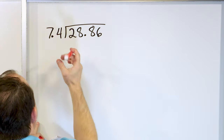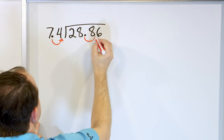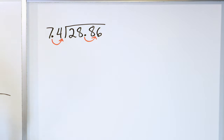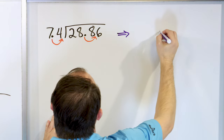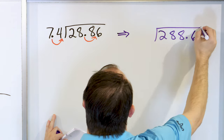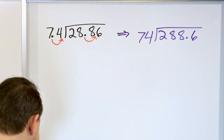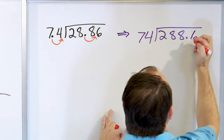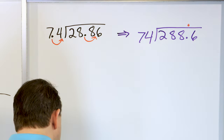So we want a whole number on the outside. We move the decimal one position here, and to keep it balanced, we move one position there — multiplying by 10 and multiplying by 10. So the related problem is 288.6 divided by 74. First, we take a look at what we have — there's a decimal point here, and the decimal point in the answer will float directly above.